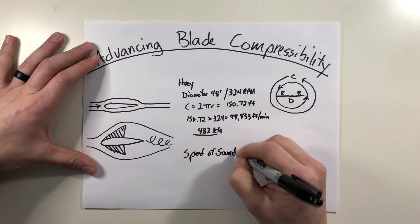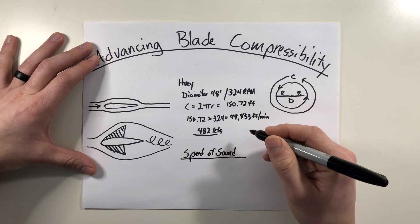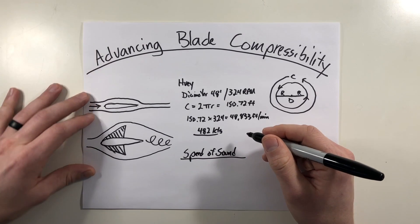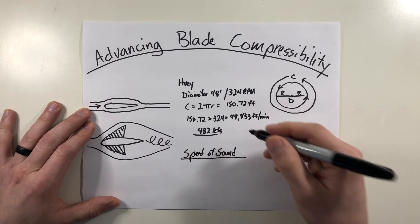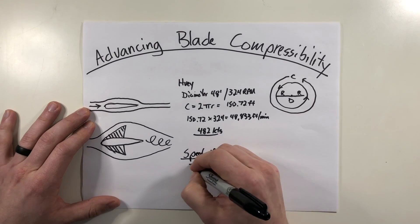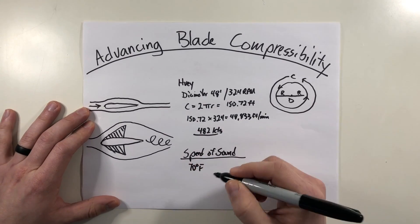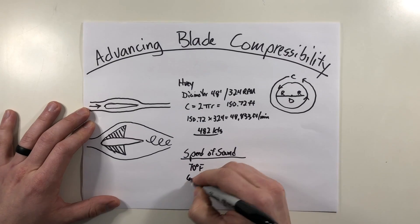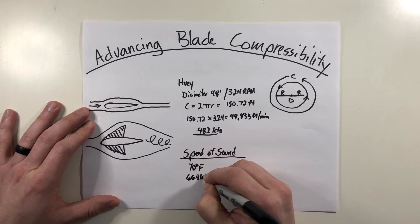Now the speed of sound, it's not a fixed number. Speed of sound is directly affected by the temperature outside. And the colder it is, the slower the speed of sound is. So at 70 degrees Fahrenheit, the speed of sound is roughly 668 knots.